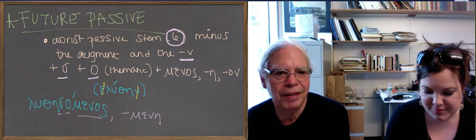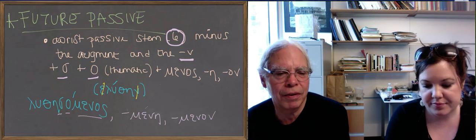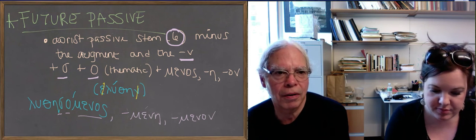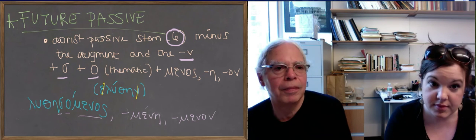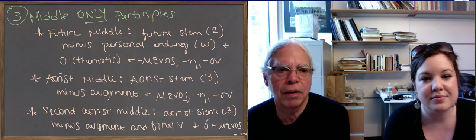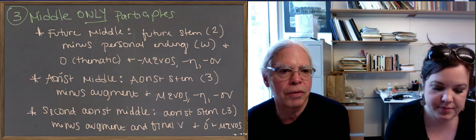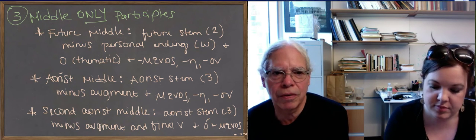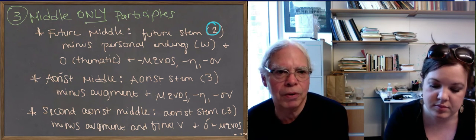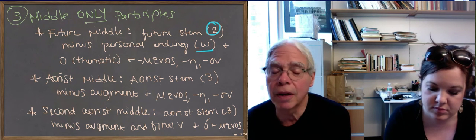So, now we're going to move to the next category, which is participles that are only middle. Okay, so that means we're going to do the future middle and the aorist middle, both the first aorist and the second aorist middle. So, the future middle participles, these are the easiest, I think. You start with a future stem, the second principal part. You remove the personal ending omega. You add the thematic vowel and then the menos suffix.